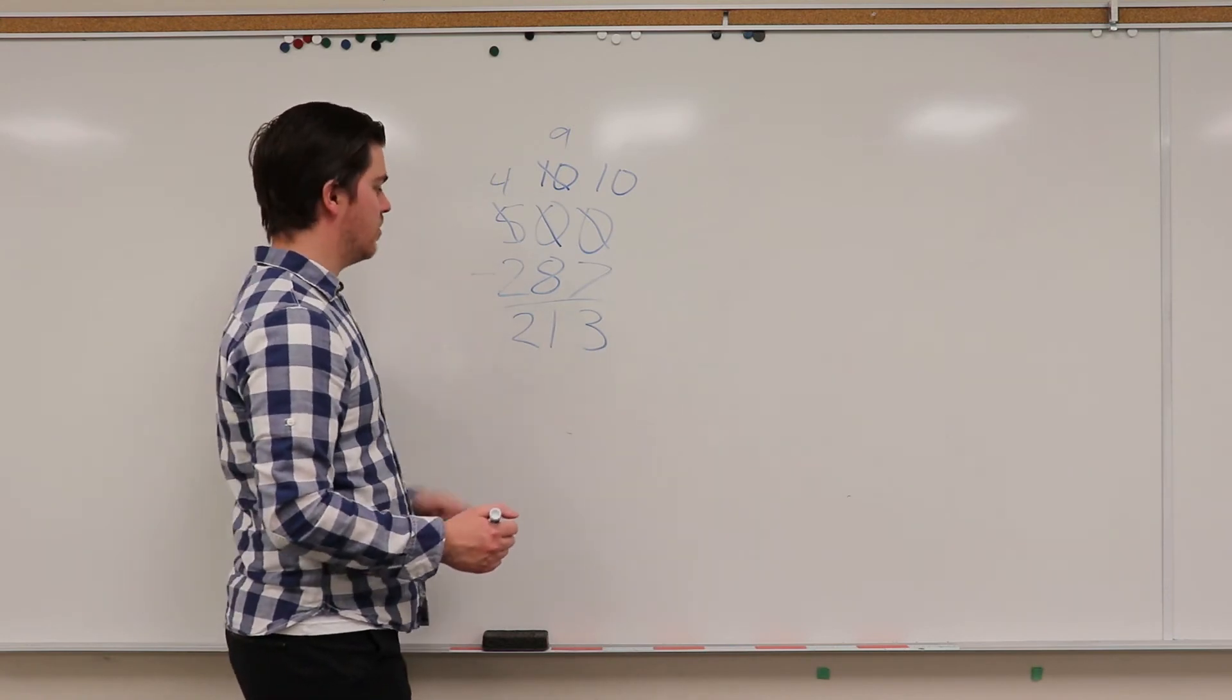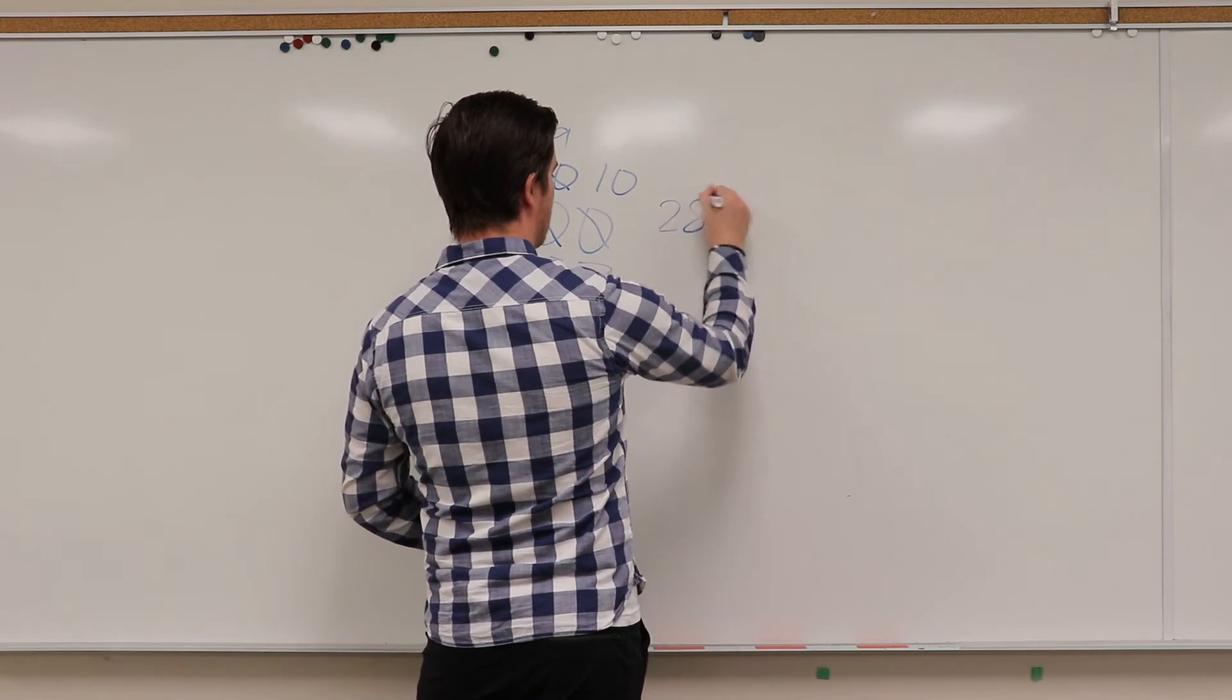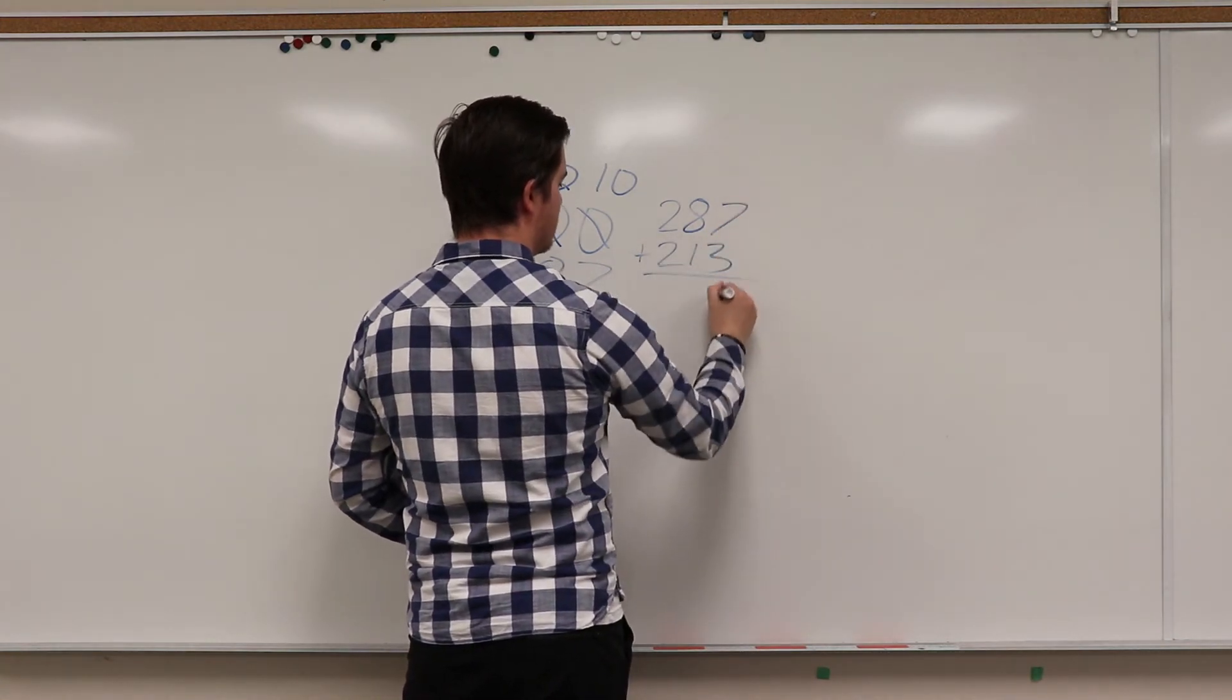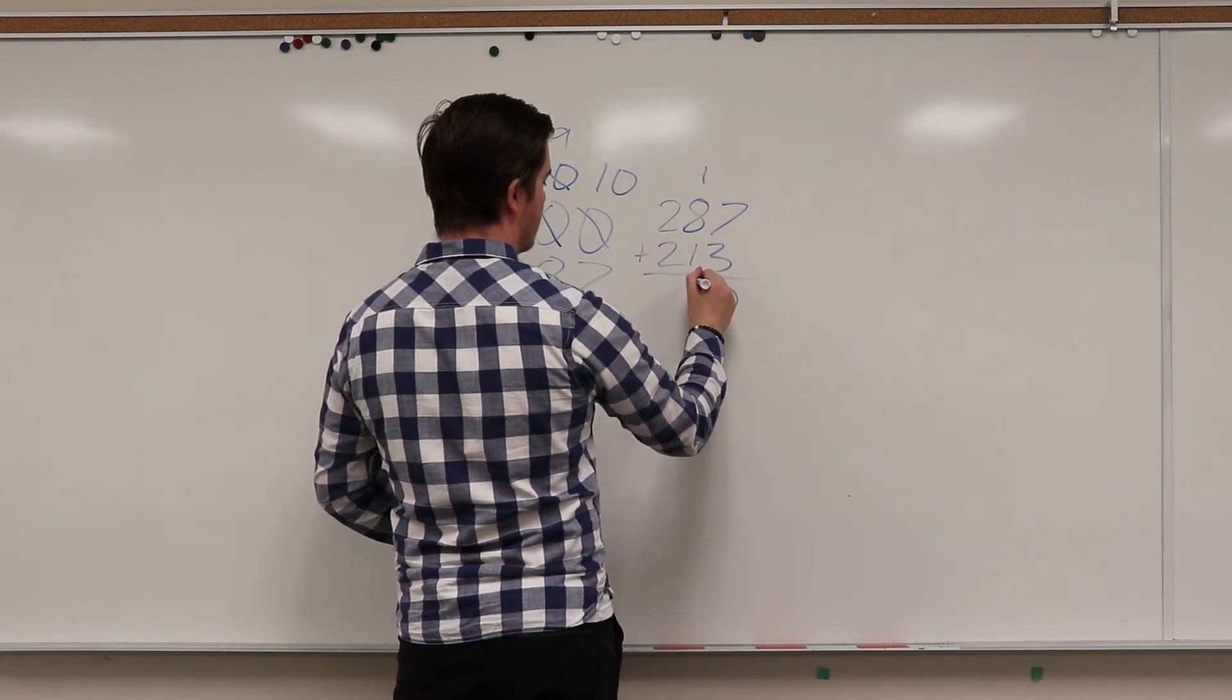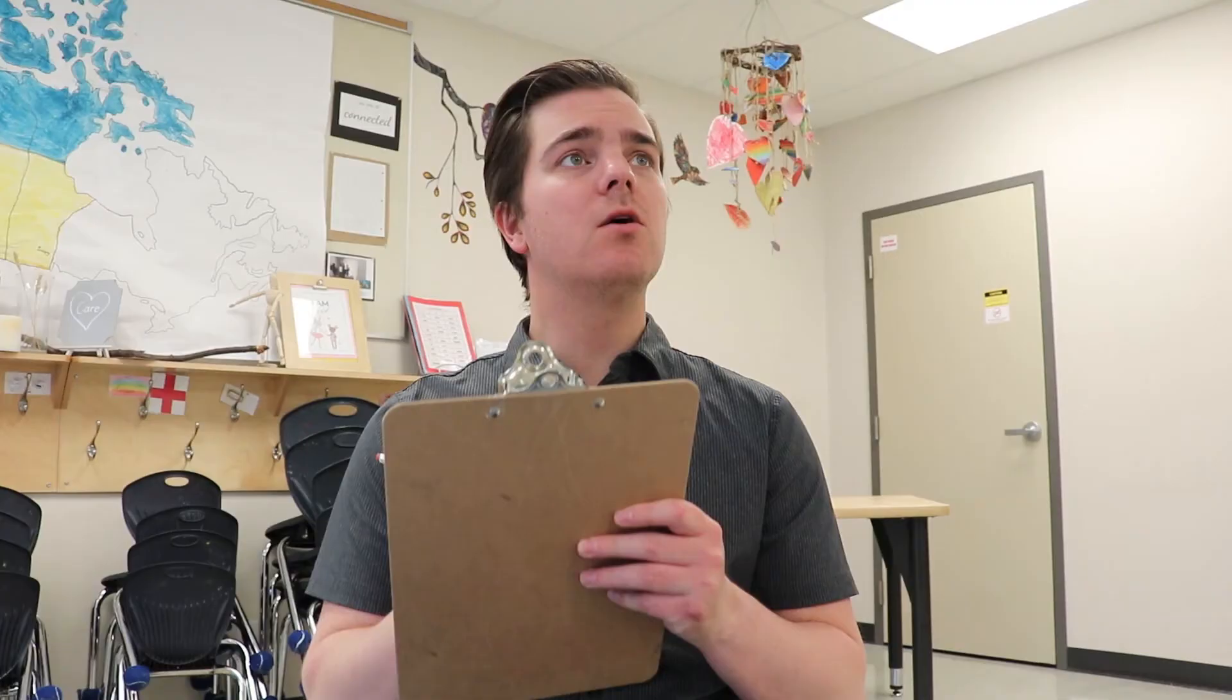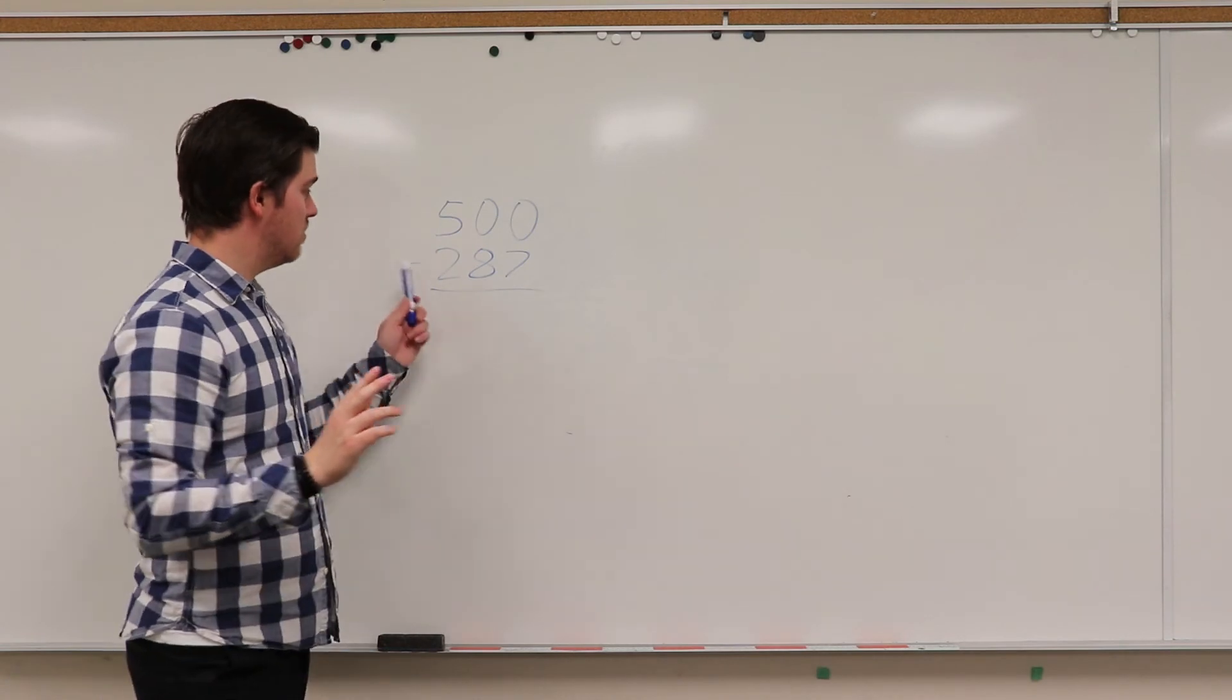Well, let's try our adding strategy to double check. So we take our answer and then we add it to the smallest number in the question and it should equal 500. 287 plus 213: 7 plus 3 is 10. 8 plus 1 plus 1 is also 10. 2 plus 2 plus 1 is 5. 500. There we go.